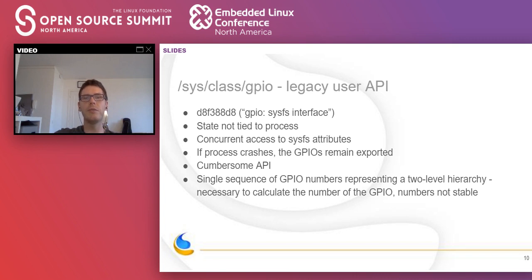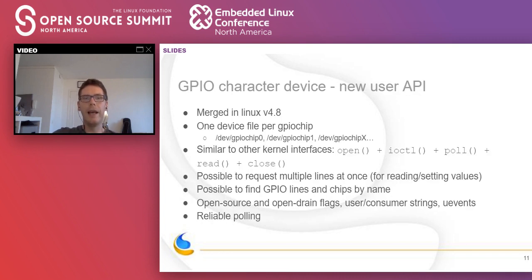I'd really like to stress the need to move away from this interface. Even last year in Lyon during the ELCE, there was a talk still presenting the SysFS GPIO interface. We're working hard to remove the global number space from the kernel, but SysFS is one of those things that will block us for the foreseeable future. So please don't use it anymore — it's now disabled by default anyway. Since Linux 4.8, we have a new interface for GPIOs in user space: the character device.